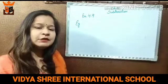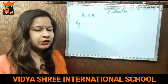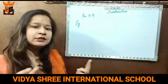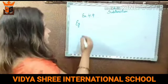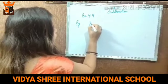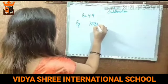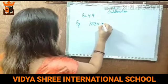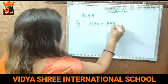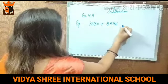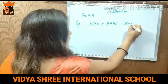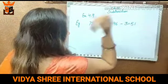So we will see what we have to do first — addition or subtraction. Let us take an example. I am taking these four-digit numbers: 7830 plus 8596 minus 3051.